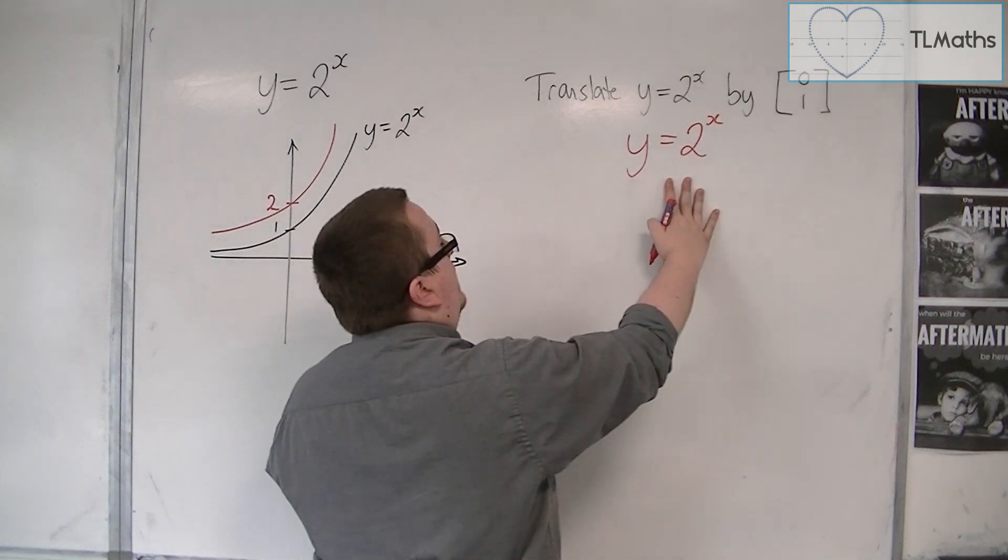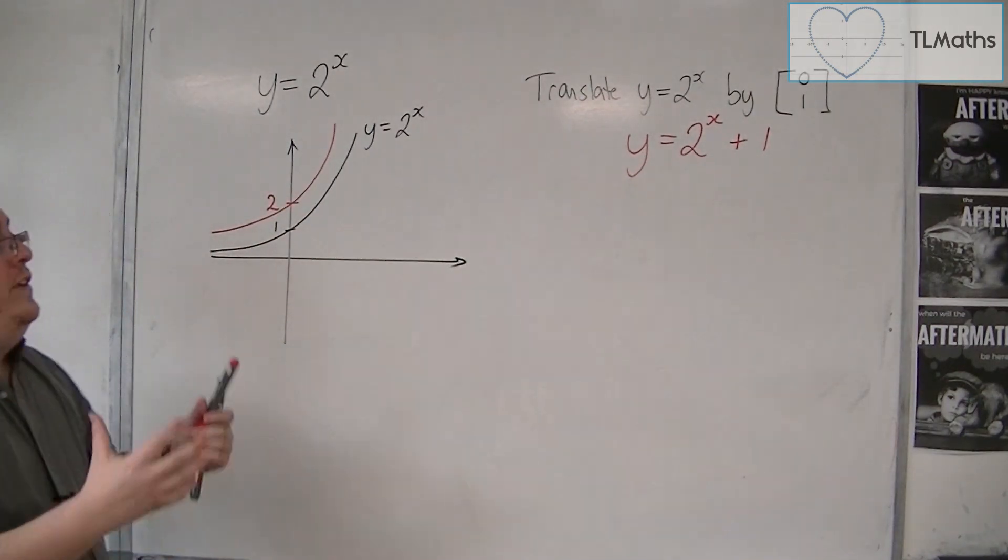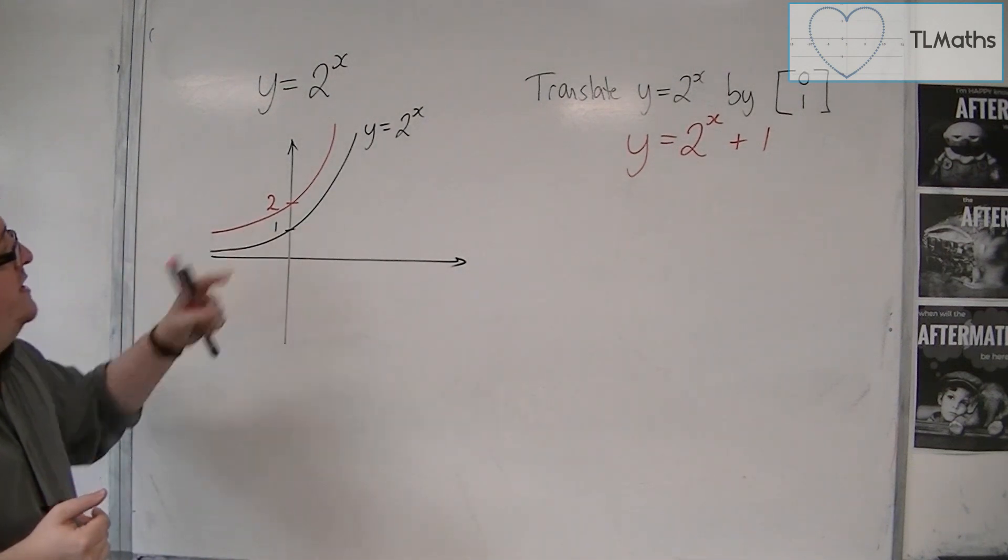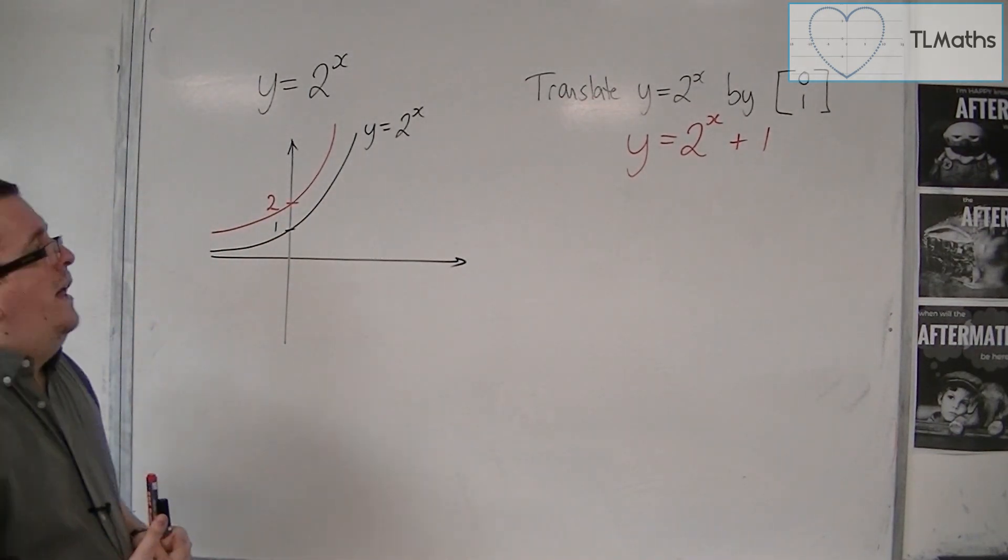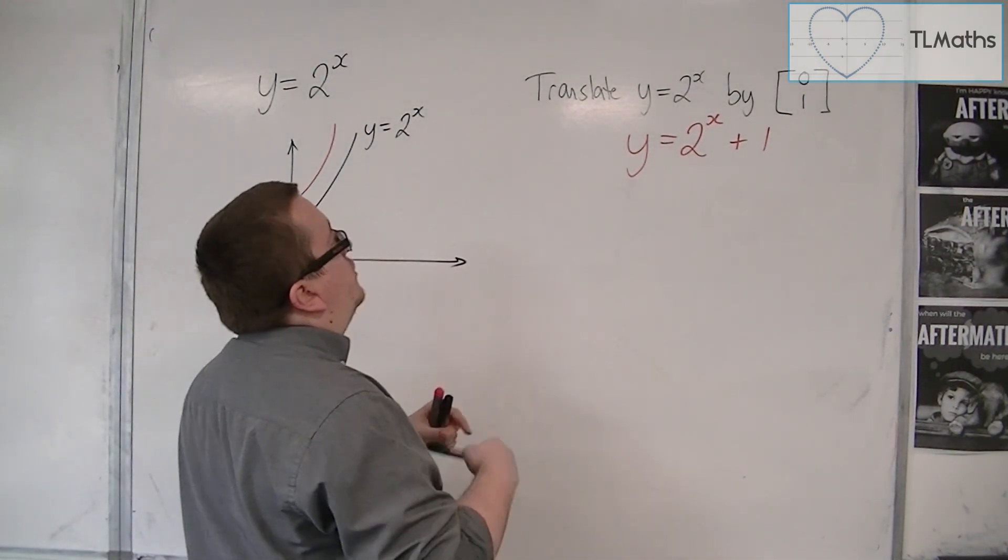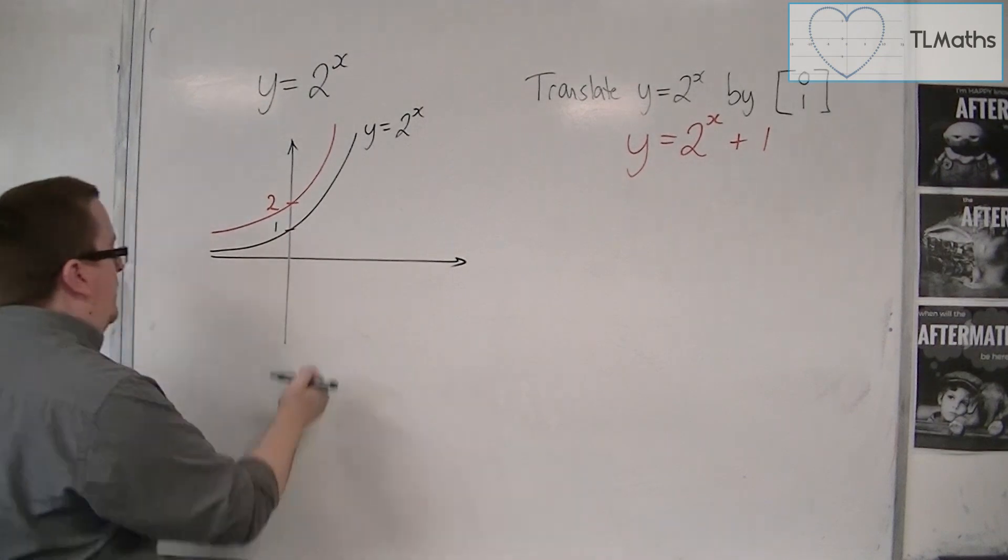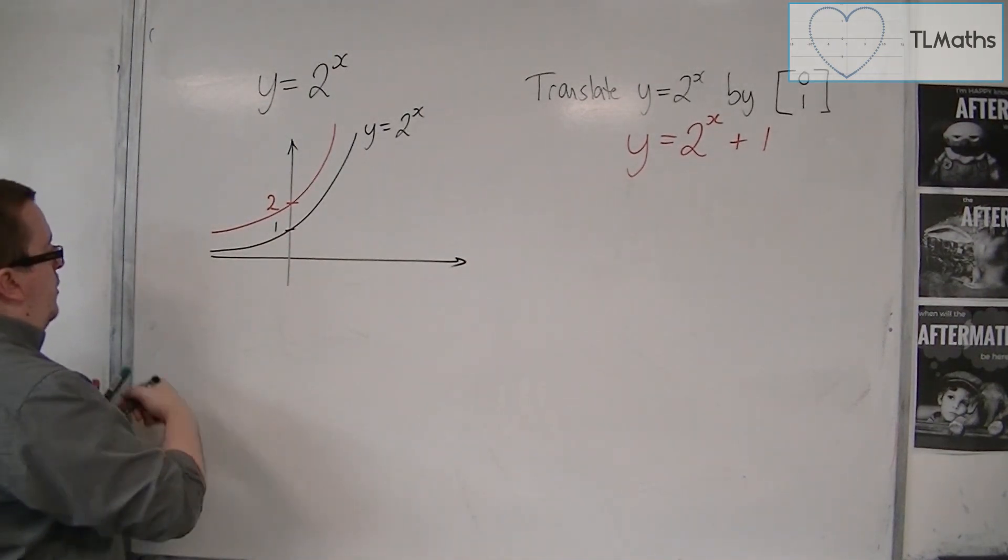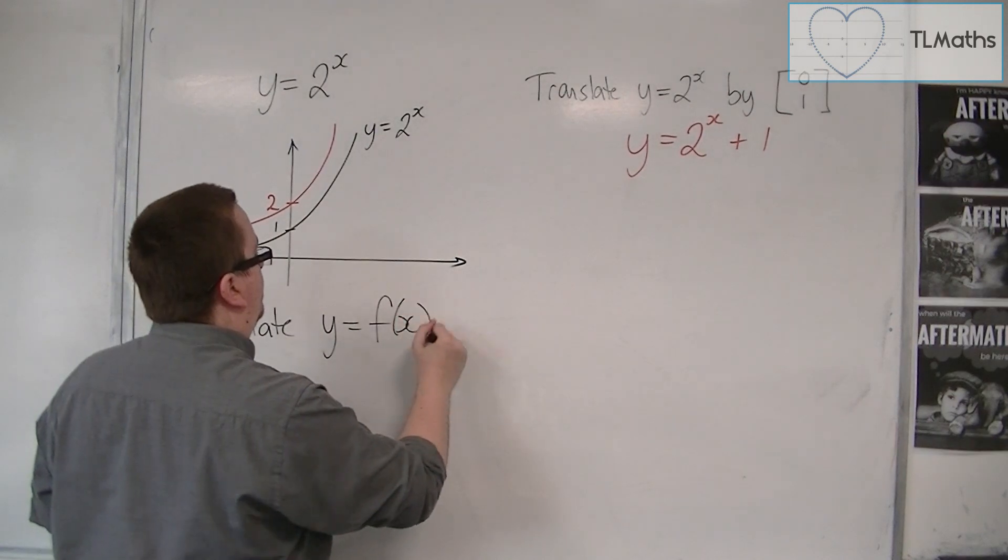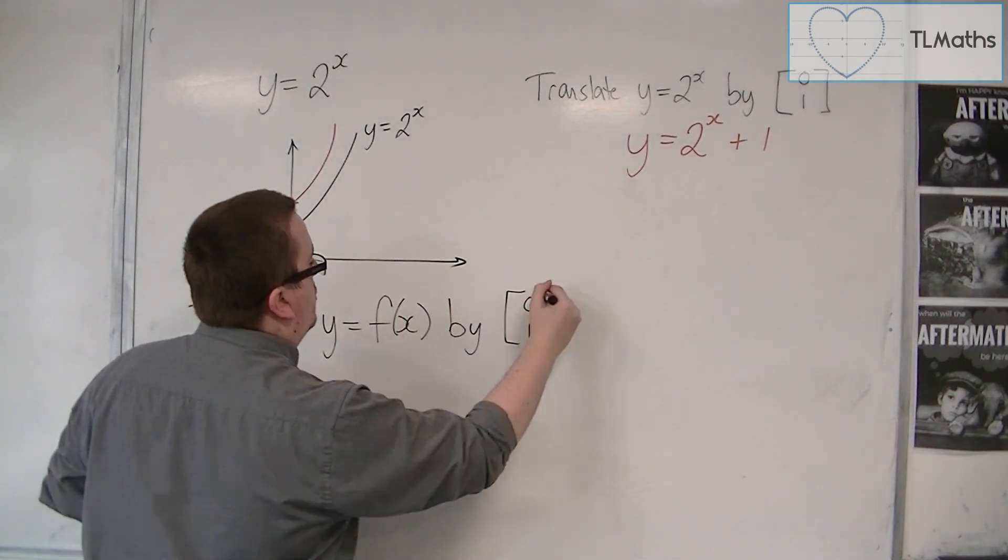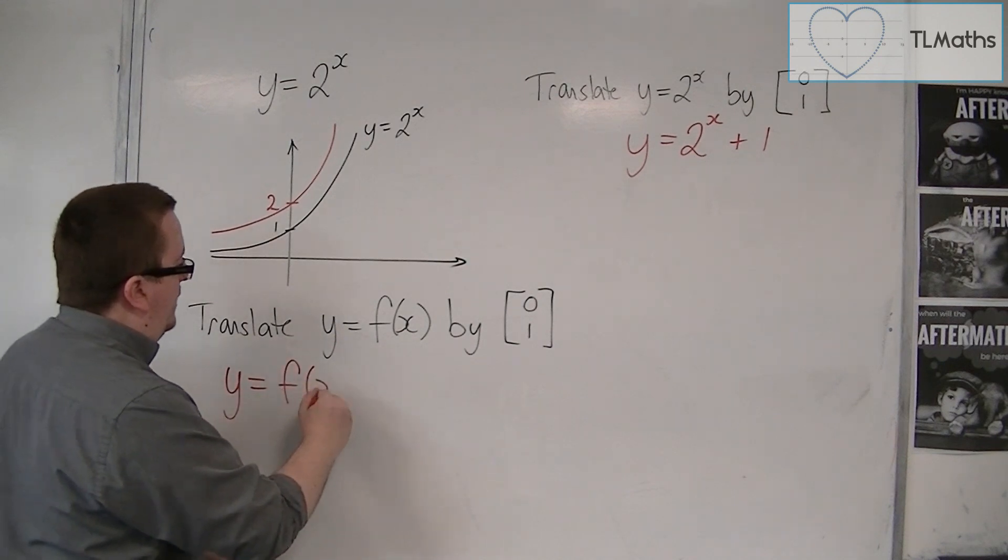And this is the equation of my new curve, this red curve here. So, how can we look at that in more general terms? Well, what you could see is that with the translation, I've effectively replaced the y with y minus 1. So, if we want to translate y equals f of x by 0, 1, then our new equation is y equals f of x plus 1.